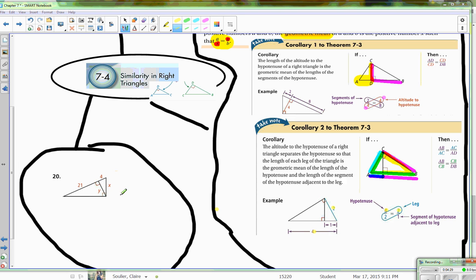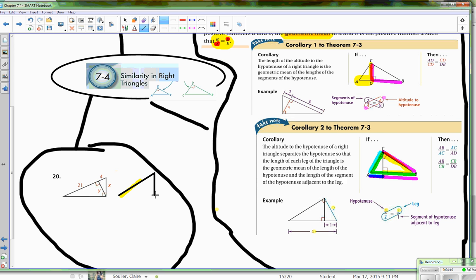All right, so the way I remember how to do these problems is I compare legs and hypotenuses. So if I look, I have one big triangle.